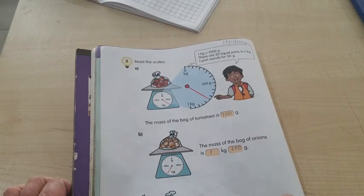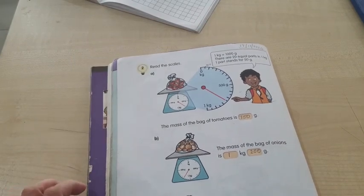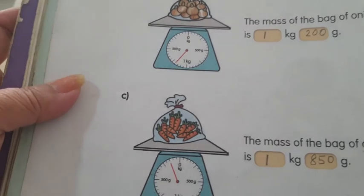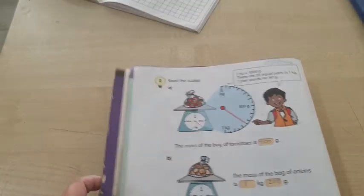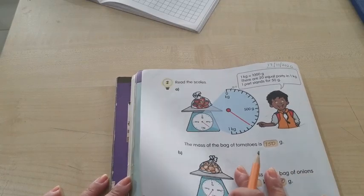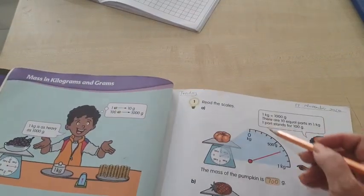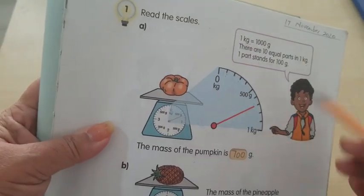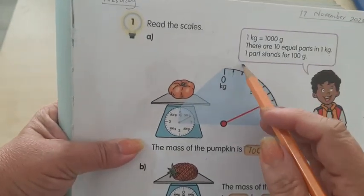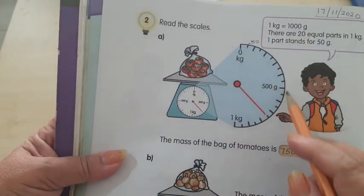Children, please understand. In this page, if the lines are only 10, you can see here the lines are only 10, each line is 100. And if there are 20 lines, that means each line is 50.